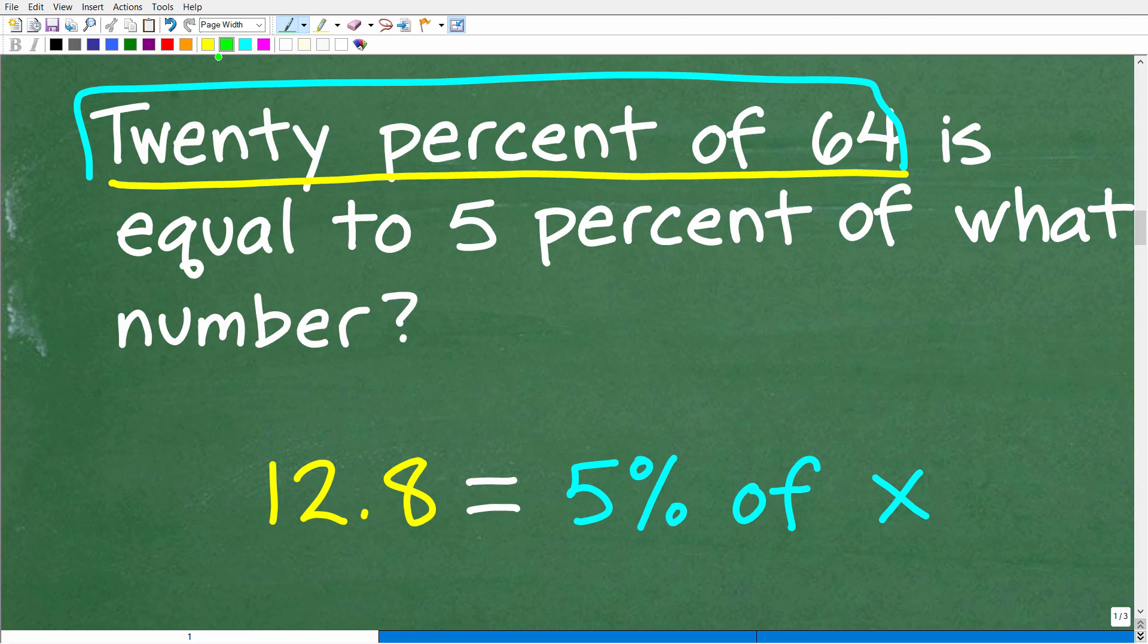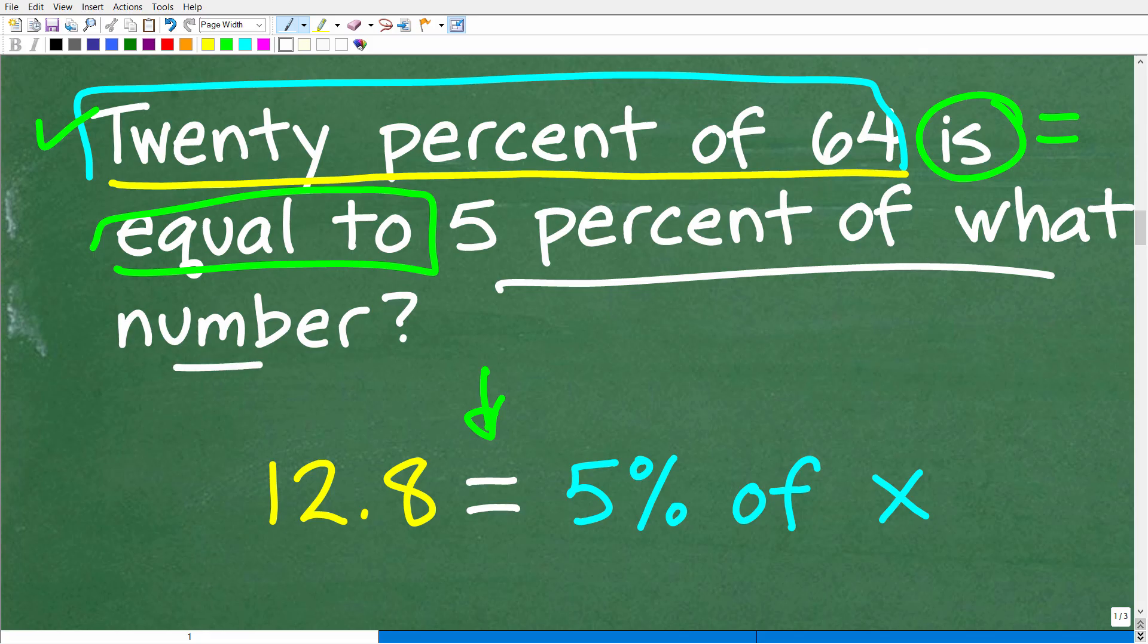And let's go ahead and talk about it right now. So the first thing that we want to notice is this word, is. Anytime you see is in a math word problem, that is the equal sign. And here it's really clear, too, because it says is equal to. So this part of the problem, what comes before is equal to, is going to be literally equal. So we can put an equal sign in between this part of the problem and this part of the problem, which is 5% of what number.